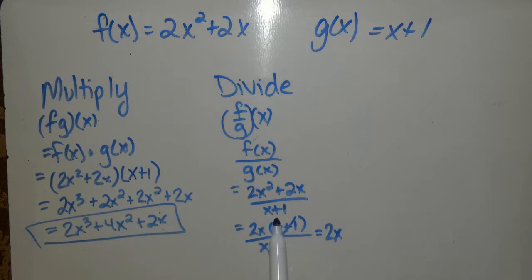to be undefined, the denominator has to be 0. So you're actually going to set x plus 1 equal to 0, and so x cannot equal a negative 1.